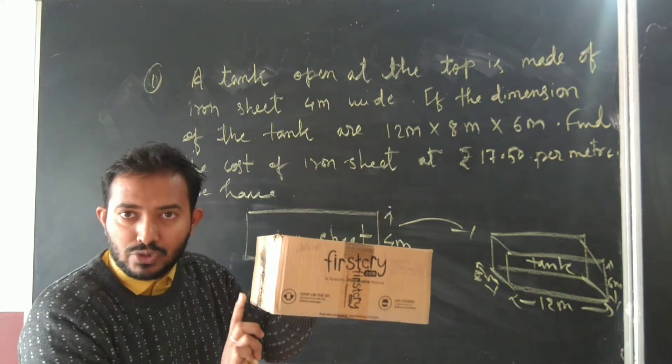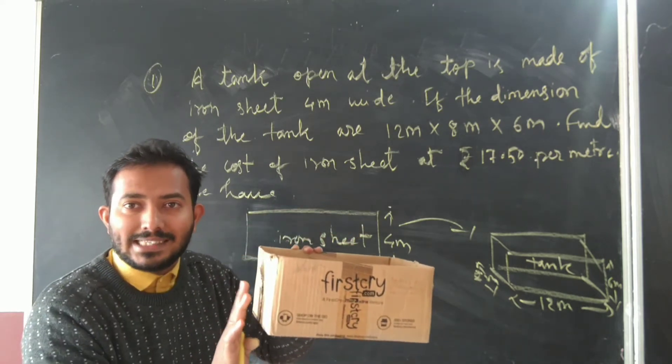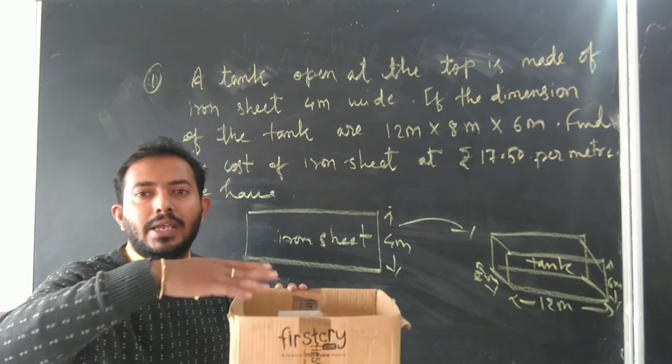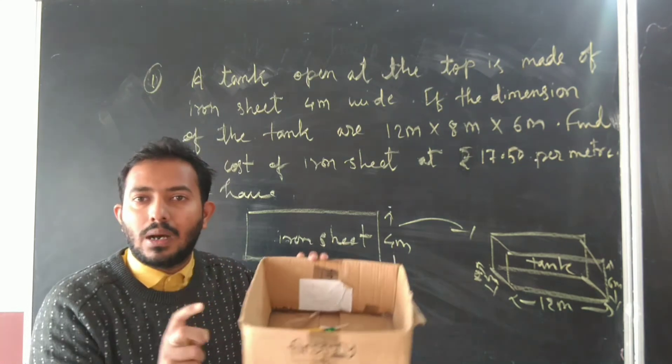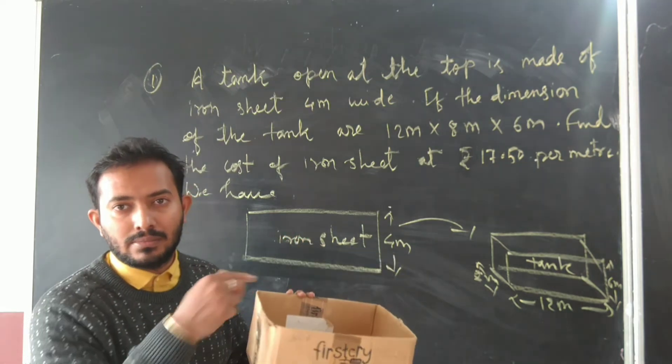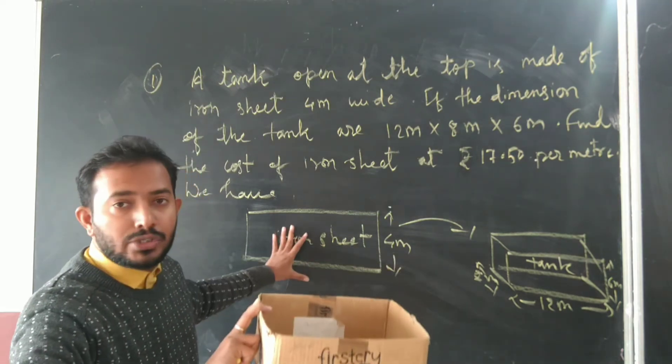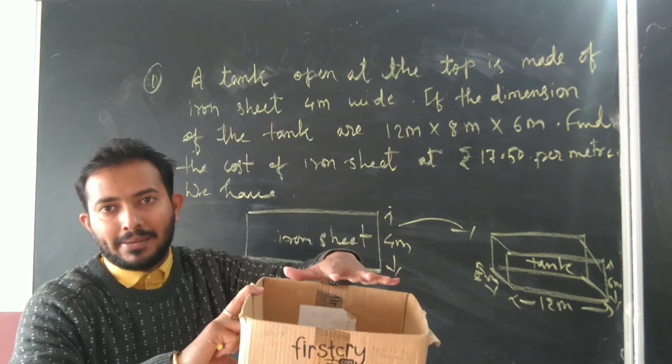One way: use TSA of cuboid minus area of top, because upper part is not there. This is the shape of the figure - the open part is open.